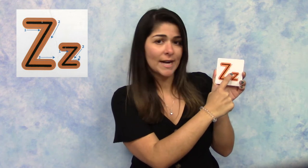The lowercase Z is very similar to our uppercase Z, just a little smaller. You're going to draw a line across, a line down and diagonal, and then another line across.